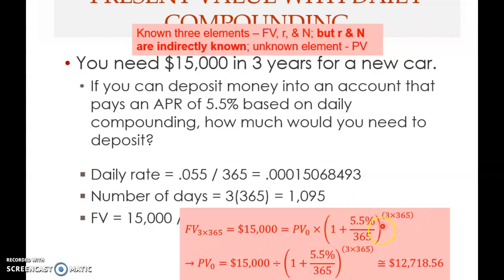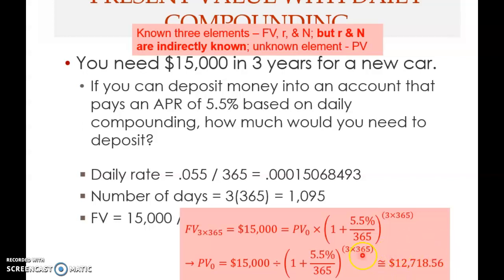So r = 5.5% ÷ 365 and N = 3 × 365 = 1,095 days. Taking 15,000 divided by (1 + r)^N gives the present value of $12,718.56. If you deposit this amount now at an APR of 5.5% compounded daily, at the end of three years you'll have $15,000 to buy your new car.